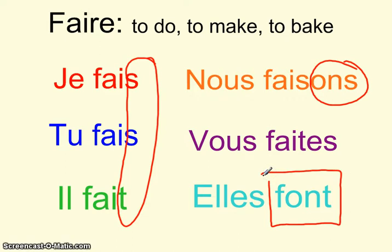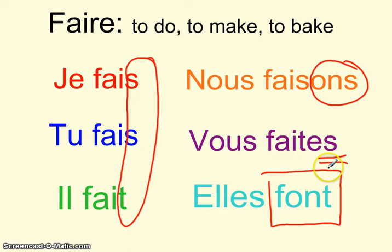Dans la troisième personne plurielle, vous avez ON, SON, VOND, et maintenant FOND. Mais attention ici, ce n'est pas un Z comme normal, c'est un S. Et la prononciation c'est vous faites — pas vous fêtez, non. Vous faites.